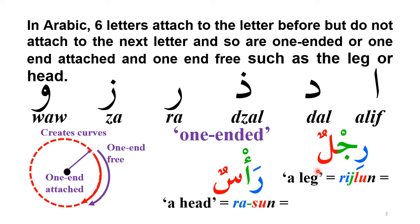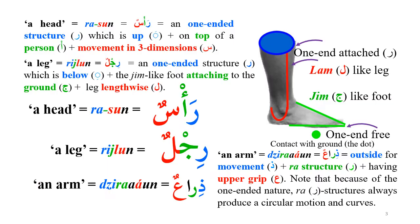You will notice this: a leg or a head is attached at one end and the other end is free. We will see this structure in many words that have these six letters — ra, alif, dal, dal, ra, za. Another issue is that ra is associated with curvature, as we have seen in previous videos. If one end is attached at the center of a circle and the other end is free and you put a ra-like motion, it will always make a curve.